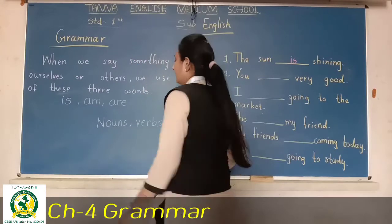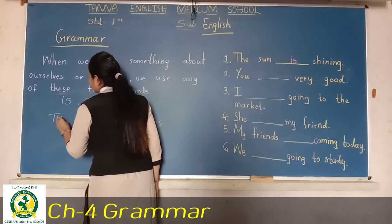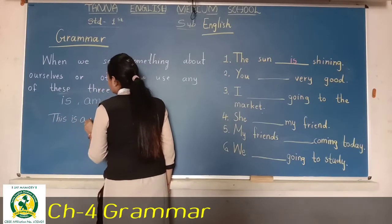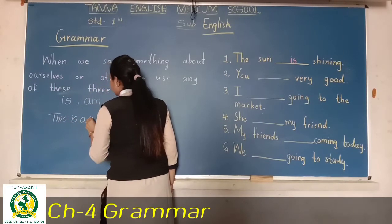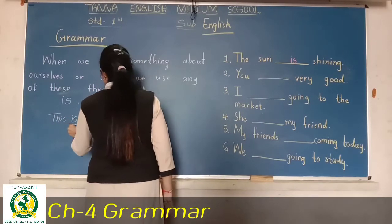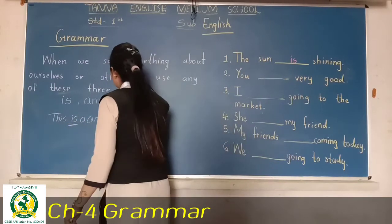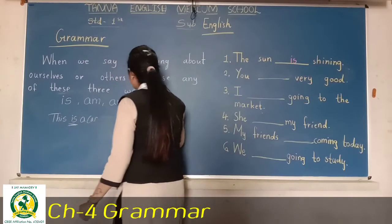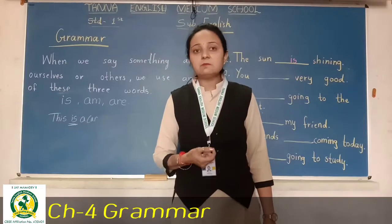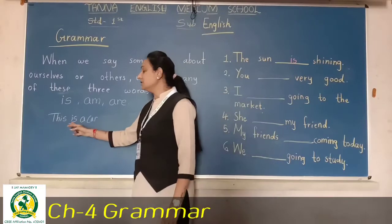For example: 'This is a car.' So here I am speaking something about a thing — ek kaar ke baare mein baat kar rahe hai. So I have written here: is.